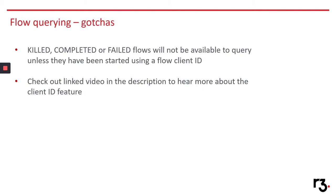One gotcha to be aware of: flows that are killed, completed, or failed will not be available to query unless they have been started using a flow client ID. This is because if we kept information on all flows that run on a node, especially in high-throughput use cases, that would lead to a lot of buildup of data in the node's database. For now, we only allow querying flows that have been explicitly started with a client ID, which means they're meant to be deduplicated and retrieved later as part of a developer application. I'm not going to demonstrate this since it is also a new feature, but we have linked a video explaining it in the description of this video.